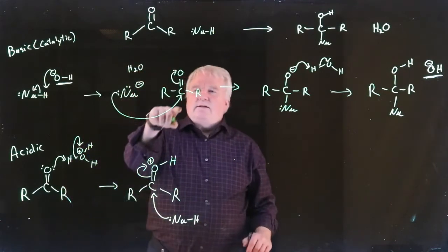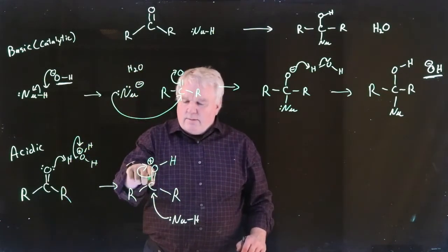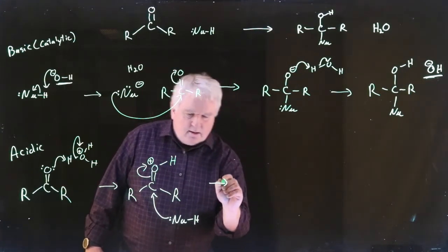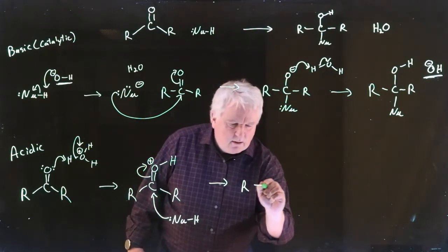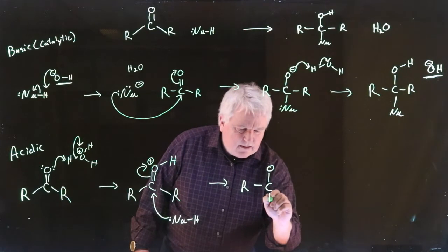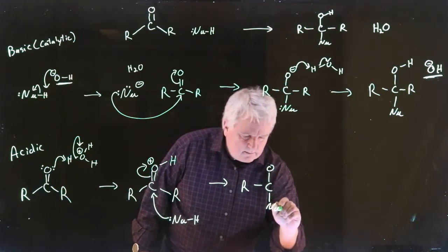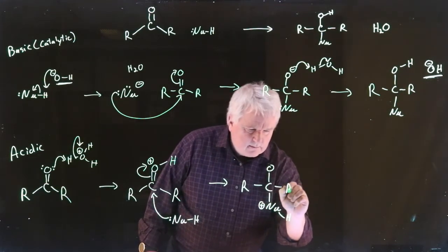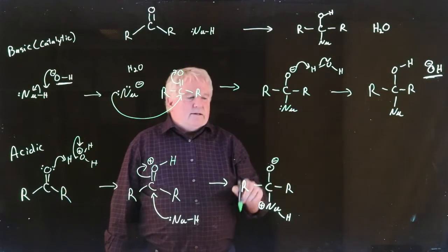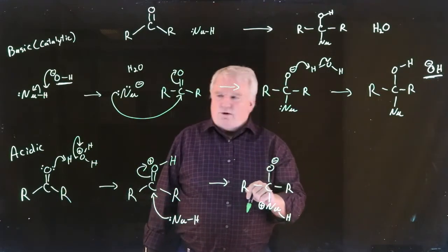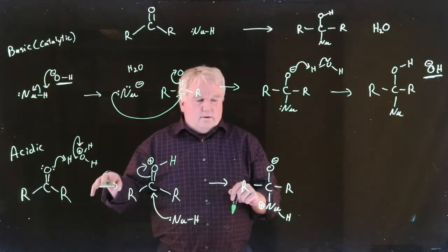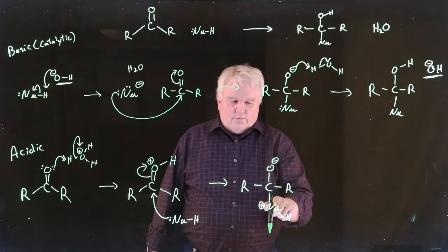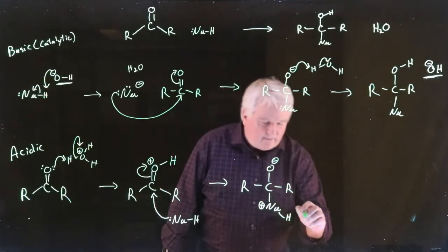Notice that we push our electrons the same. We attack the electrophilic carbon and we promote our pi electrons onto the oxygen so that we end up in the next step. We have an sp3 hybridized carbon and an sp3 hybridized oxygen with a negative charge. Now we need to pull this proton off. We can pull that proton off with water.